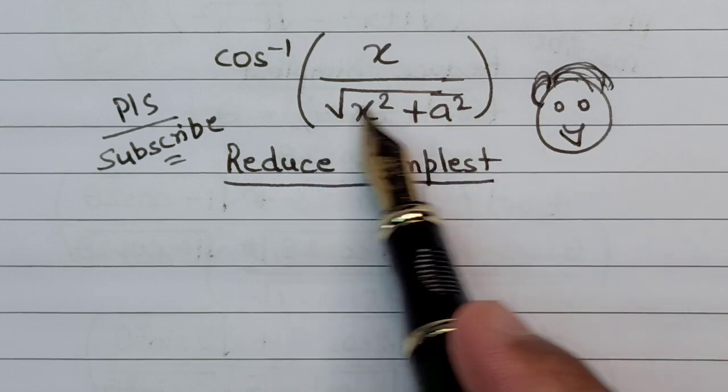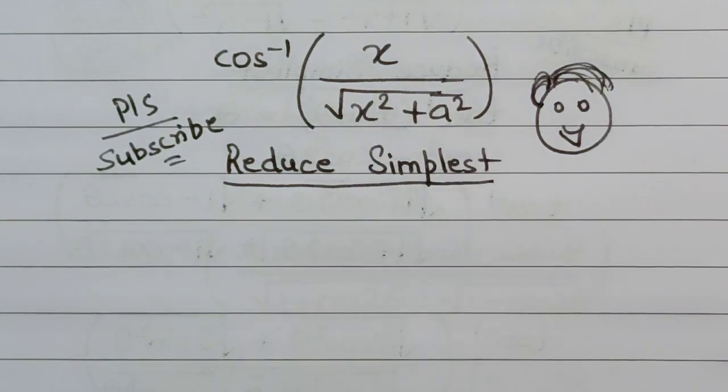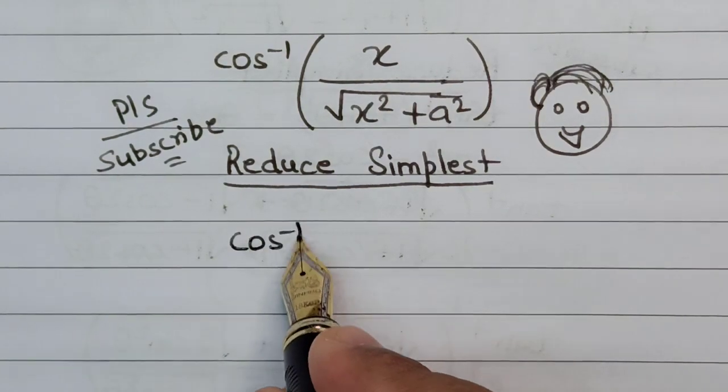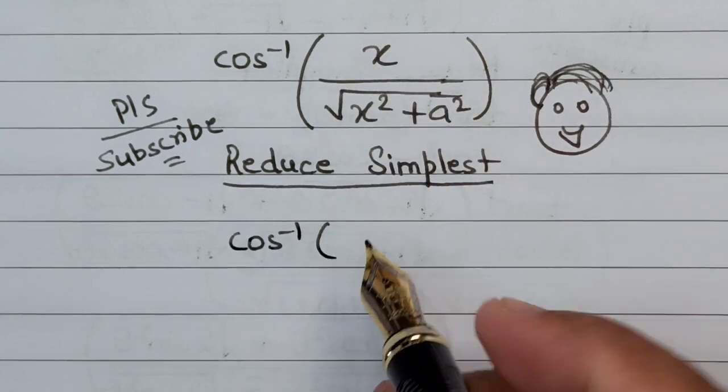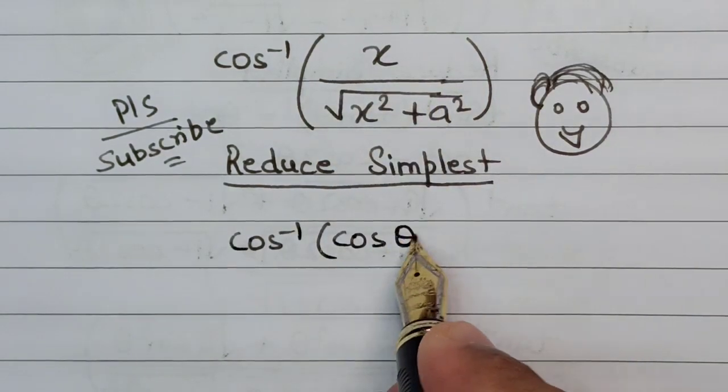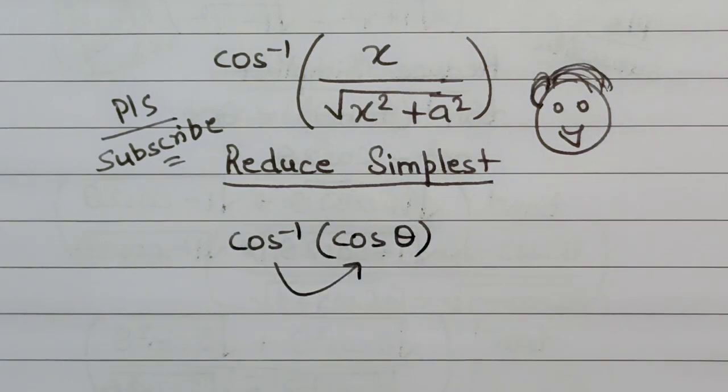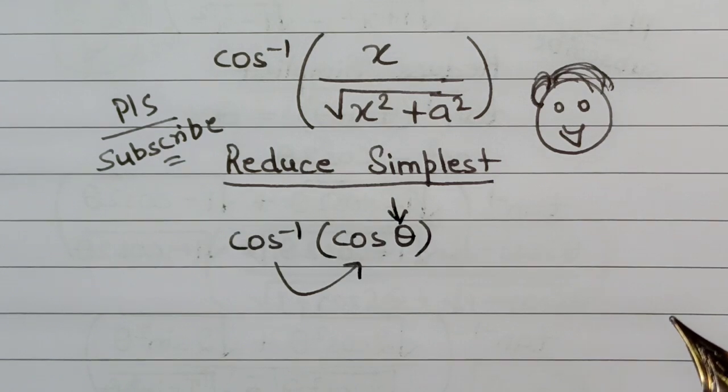So here we have cos⁻¹(x / √(x² + a²)). Now I know for a fact that if somehow we are able to reduce this part which is inside the bracket in terms of cos θ, then this cos inverse and this cos can cancel out each other, and then this θ here will be the final answer.